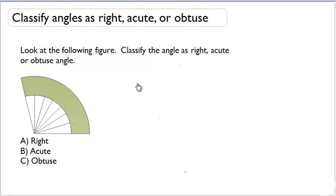In order to classify an angle, we must first decide whether it's right, acute, obtuse, or even a straight angle.